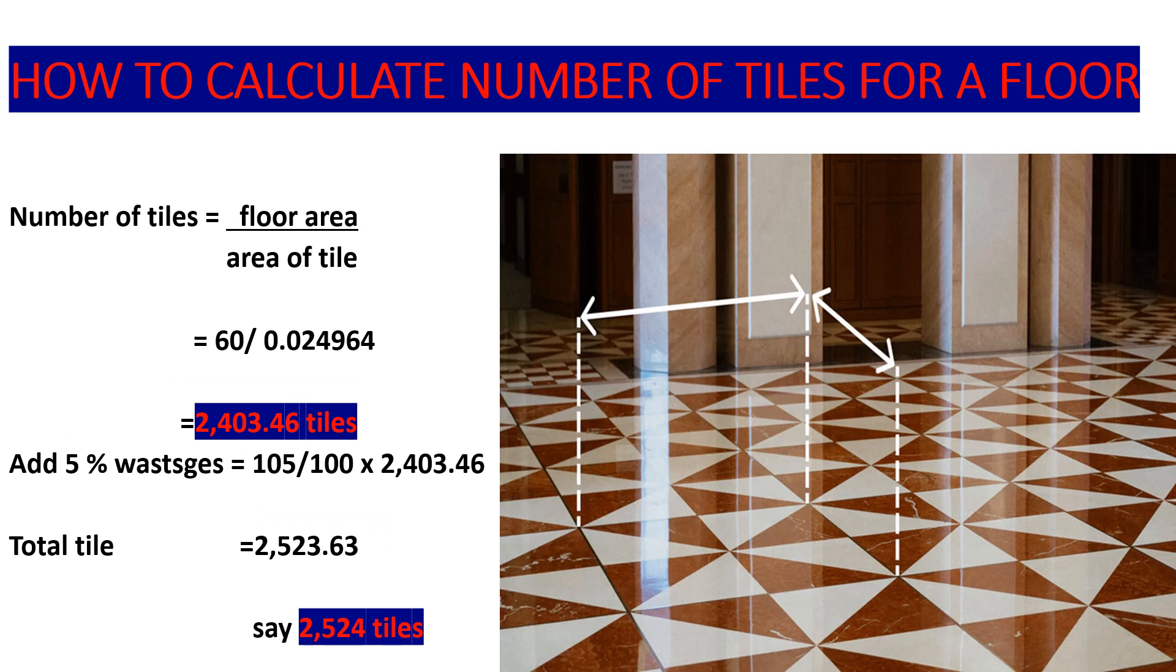So the number of tiles will be the floor area over the area of tile. Remember, this is the area of tile which has mortar. So our floor area is 60 square meters. The area of tile with mortar was 0.024964. So if you divide 60 by the area of tile with mortar, it's giving you 2,403.46 tiles.